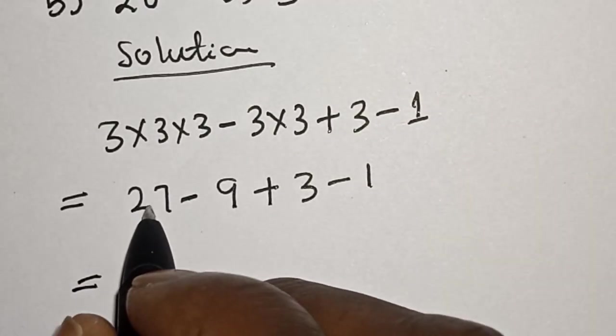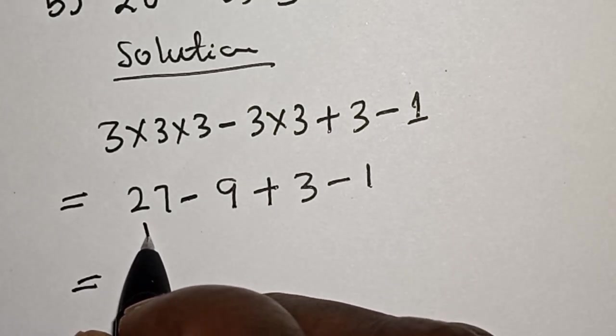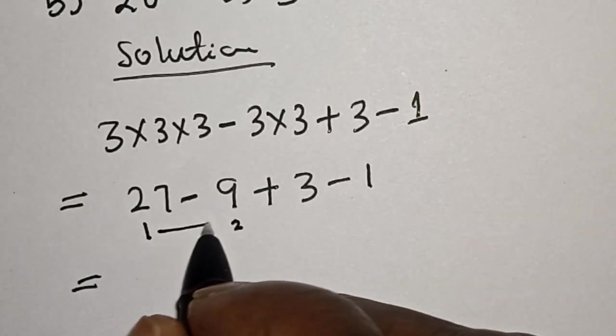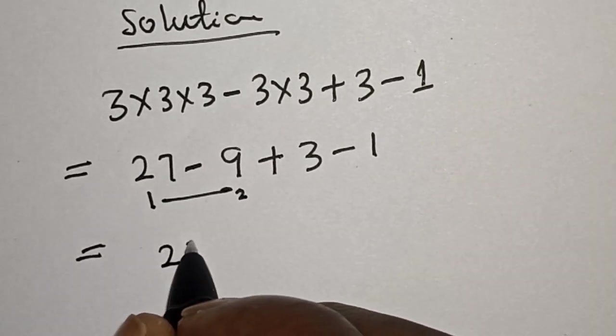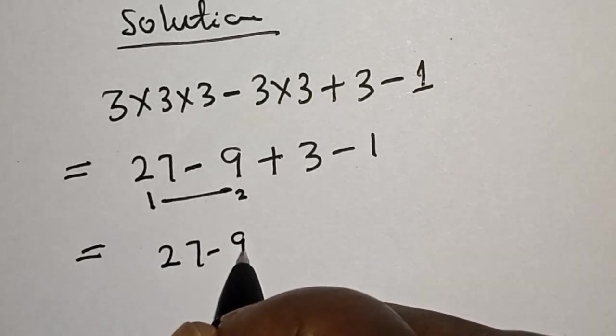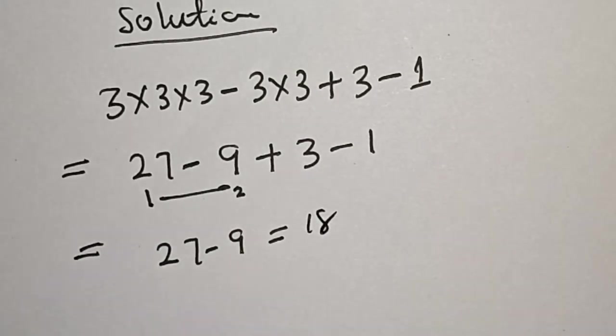This is equal to 3. Let's work with this first 2 first. Then here is 27 minus 9. This is equal to 18.